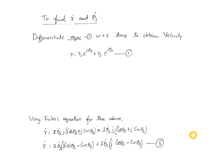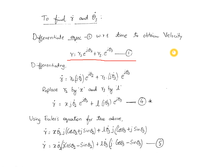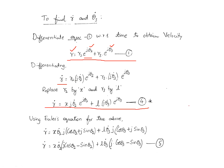For velocity analysis, differentiate the loop closure equation with respect to time. The variables are r, theta2, and theta3; x and L are constants. Differentiating yields: r-dot = x·j·theta2-dot·e^(j·theta2) + L·j·theta3-dot·e^(j·theta3). Replacing x with x and L with L, and applying Euler's equation, equation 4 becomes equation 5 after expanding the exponential terms.